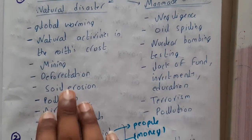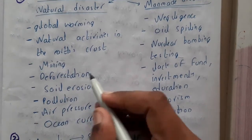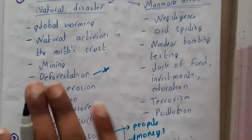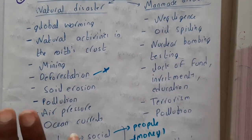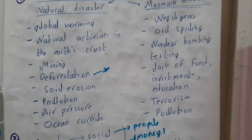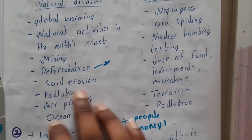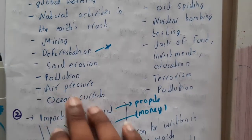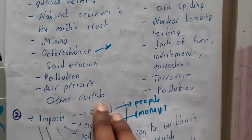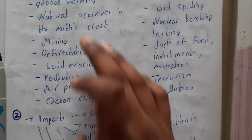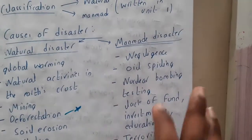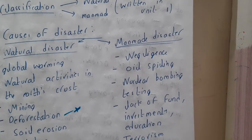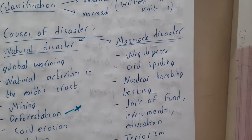Similarly, mining can also lead to multiple disasters. Deforestation is another major cause — whenever you are writing about any kind of disaster, you can blindly write deforestation as a cause. Similarly, soil erosion, pollution, air pressure, and ocean currents are some of the causes of natural disasters.